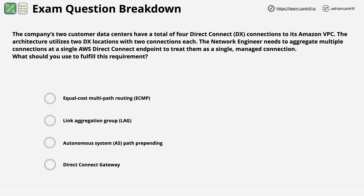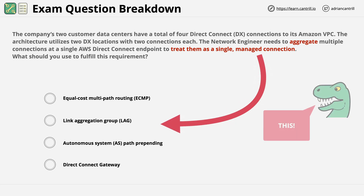With all of these in mind and knowing the function of each of these different products or features, the question becomes easy. This question focuses on aggregating multiple connections so they're treated as a single managed connection. Because we already know what each of the answers offers, choosing the right one is easy. Answer B is correct because this is what a LAG provides, and the other answers are simply incorrect.